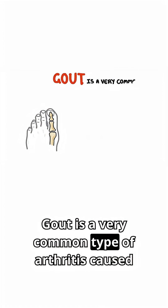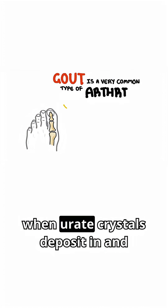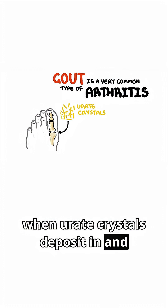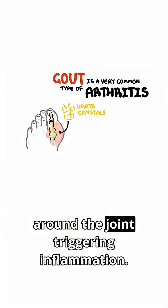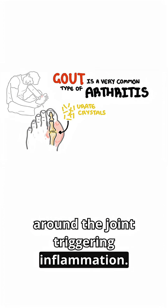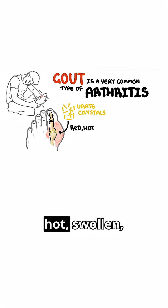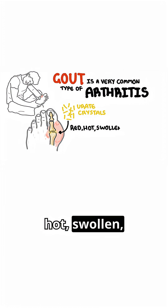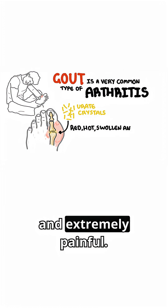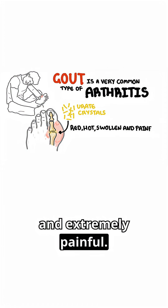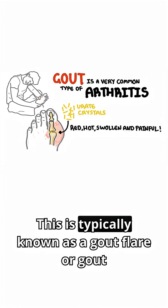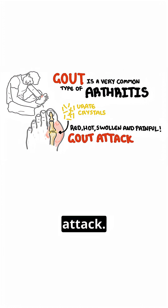Gout is a very common type of arthritis caused when urate crystals deposit in and around the joint, triggering inflammation. The affected joint becomes red, hot, swollen, and extremely painful. This is typically known as a gout flare or gout attack.